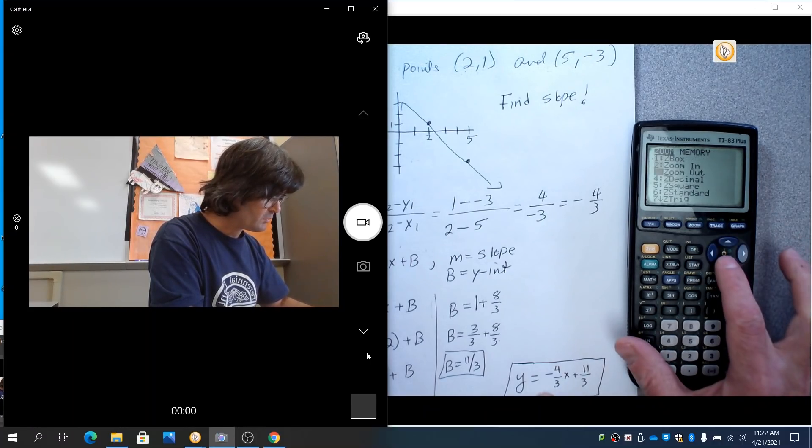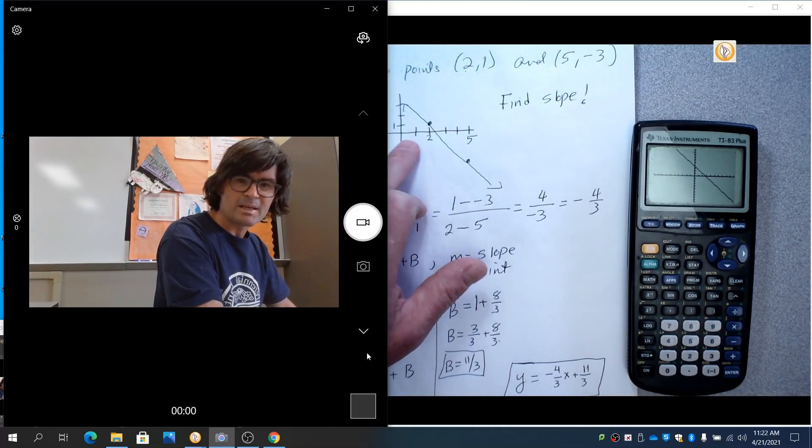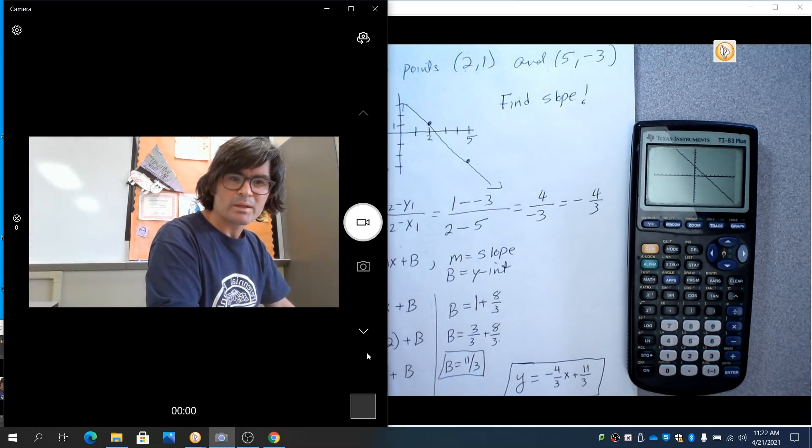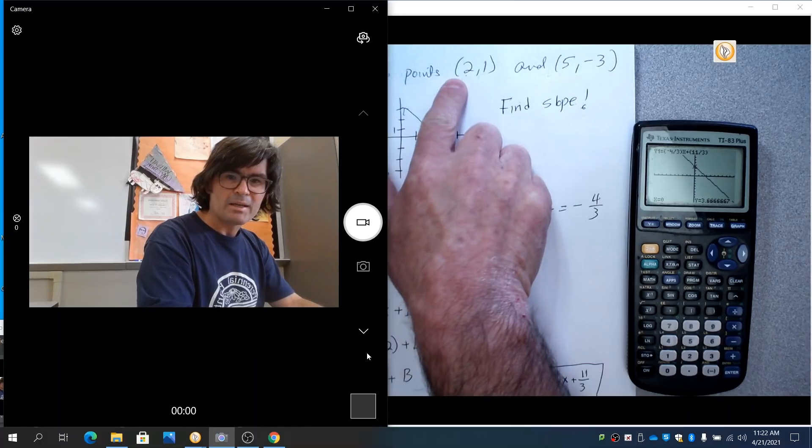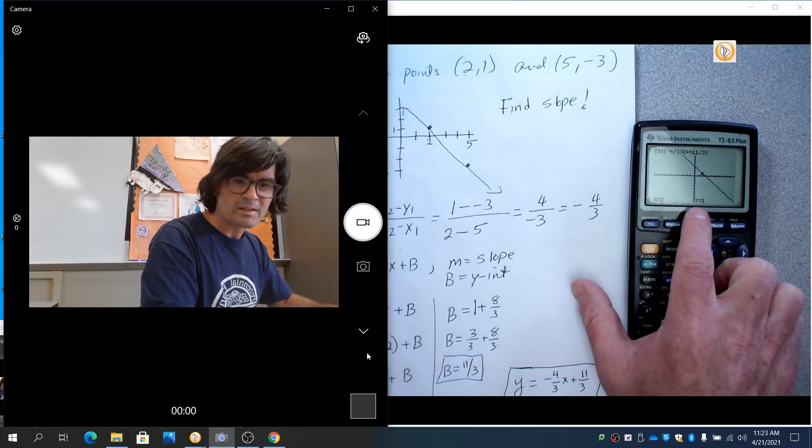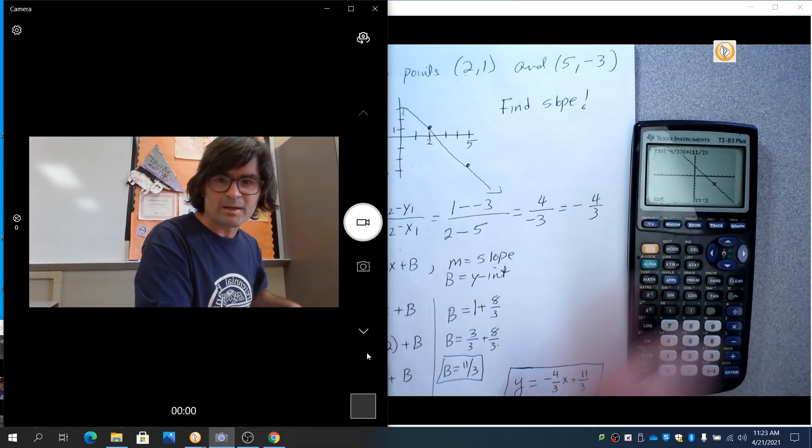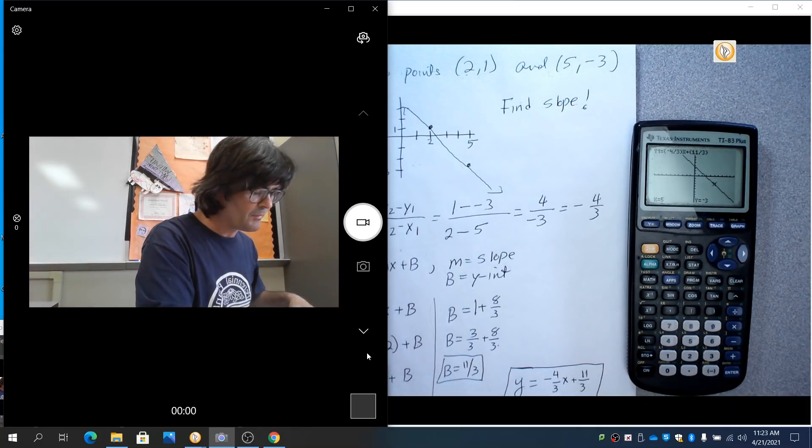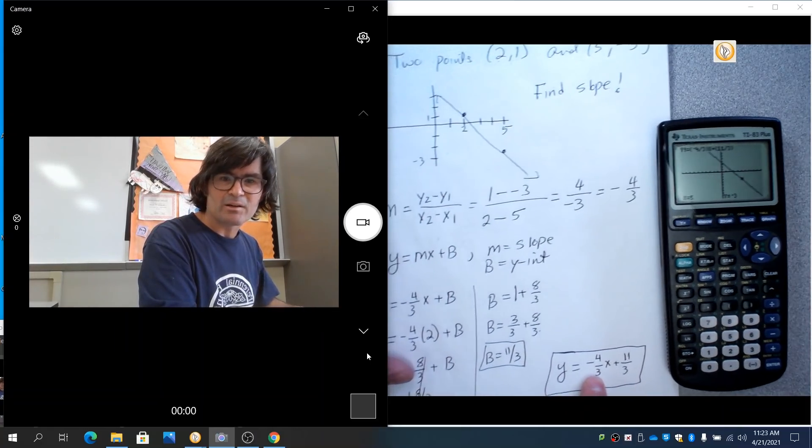We'll go to zoom 6, which is the standard window. I just want to see that this looks like what I drew. And it seems like it does. If you really want to check, you could push trace, type in 2 right here, and see if it gives me Y is 1. Yeah, sure enough, 2 is X and Y is 1. And type in 5 for X, Y is negative 3. I can see I definitely have the correct line. I definitely have the right linear equation.